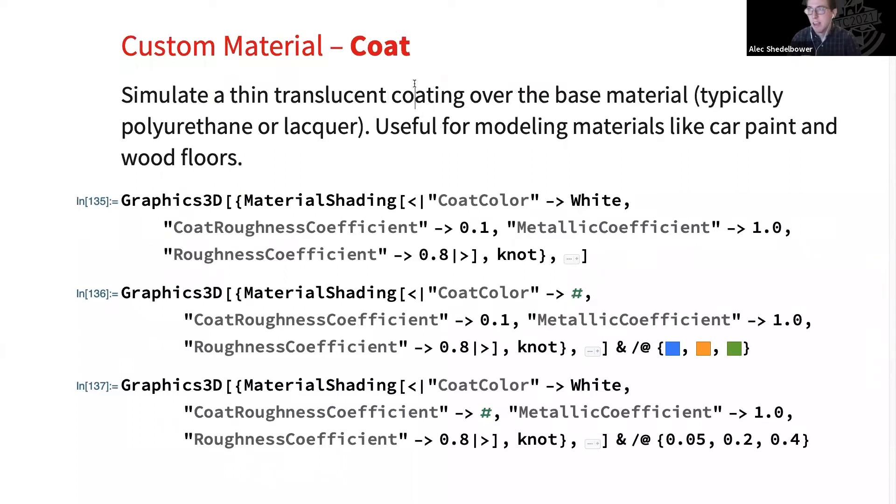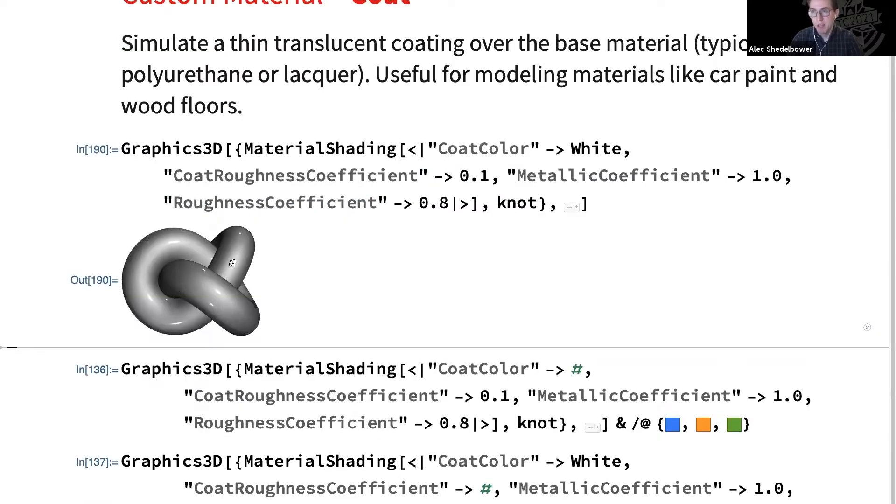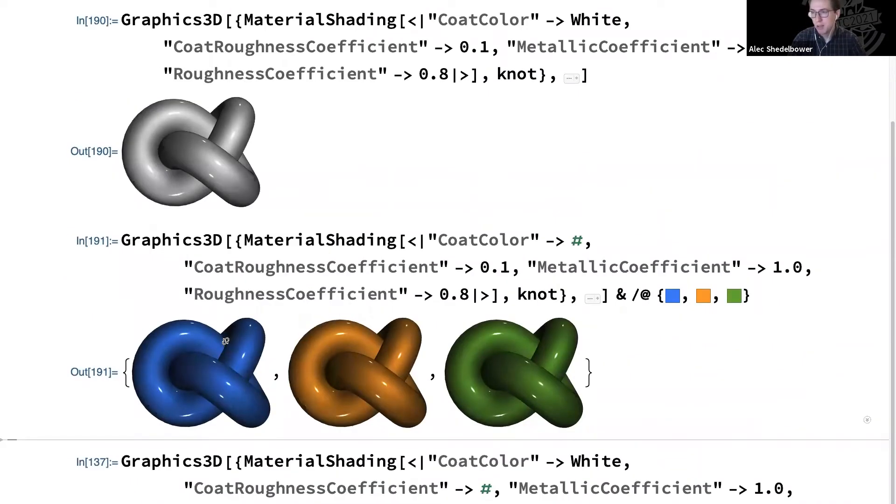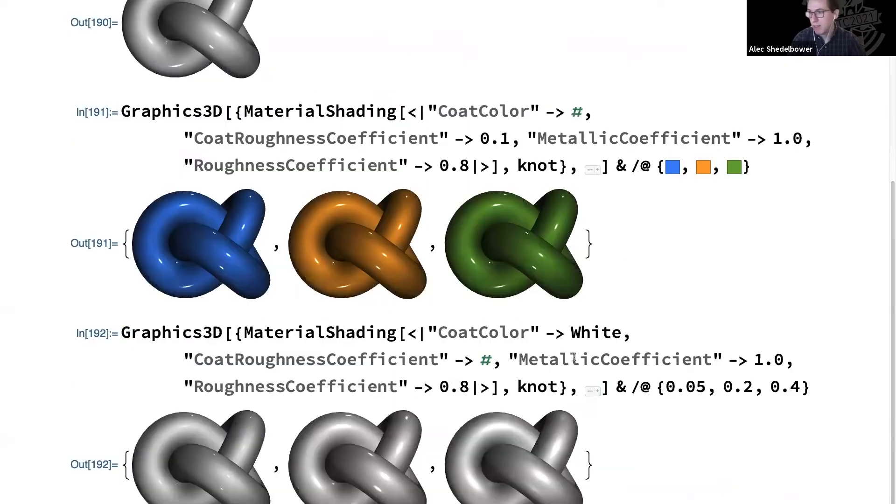Following that, we have the coat effect. This is an effect where we want to simulate a thin transparent coating that covers the surface of the object. In real life, it's usually made of something like polyurethane or lacquer. It's very useful for things like car paint and wood floors. So here, we're using two parameters, both a coat color and a coat roughness. This is running on the same sort of rough metal we saw before, but now it has a nice clear coat. So we get those very shiny highlights as well. Now we can change the color of that coat. And now it's as if the light has to pass through this kind of translucent color material before hitting the base color. So you get some interesting effects where the base color kind of interplays with this coat color. And then lastly here, we have the roughness. So like before, we're going to have very small, sharp highlights all the way to more dull highlights.